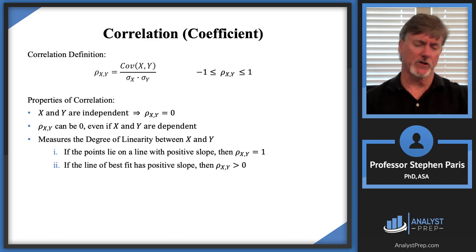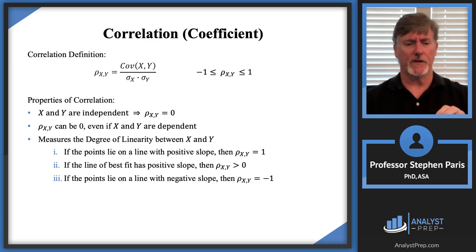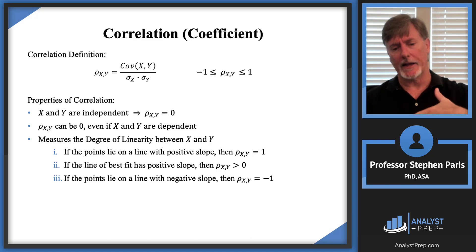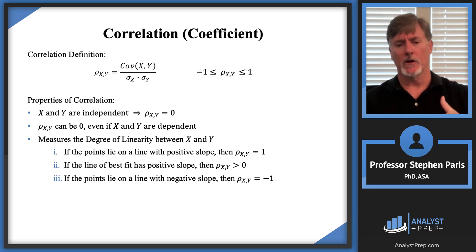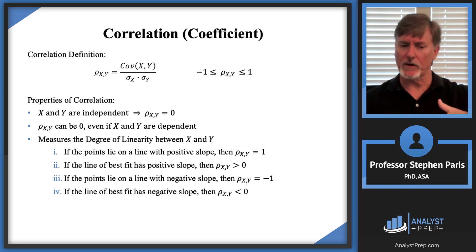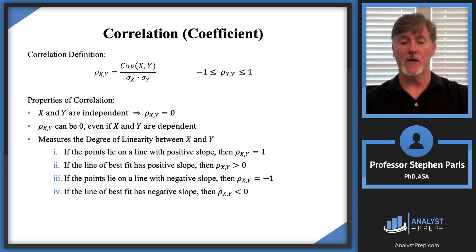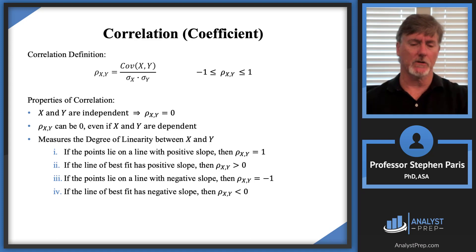Reversing the signs: if the points lie on a line with negative slope, the rho value is negative one — and again that doesn't mean the slope is negative one, it just means all points lie on a negatively-sloped line. If the points are close to a line with negative slope, the correlation will be close to negative one. The farther the points get from that line of best fit with negative slope, the larger the correlation gets from the negative direction, approaching zero.